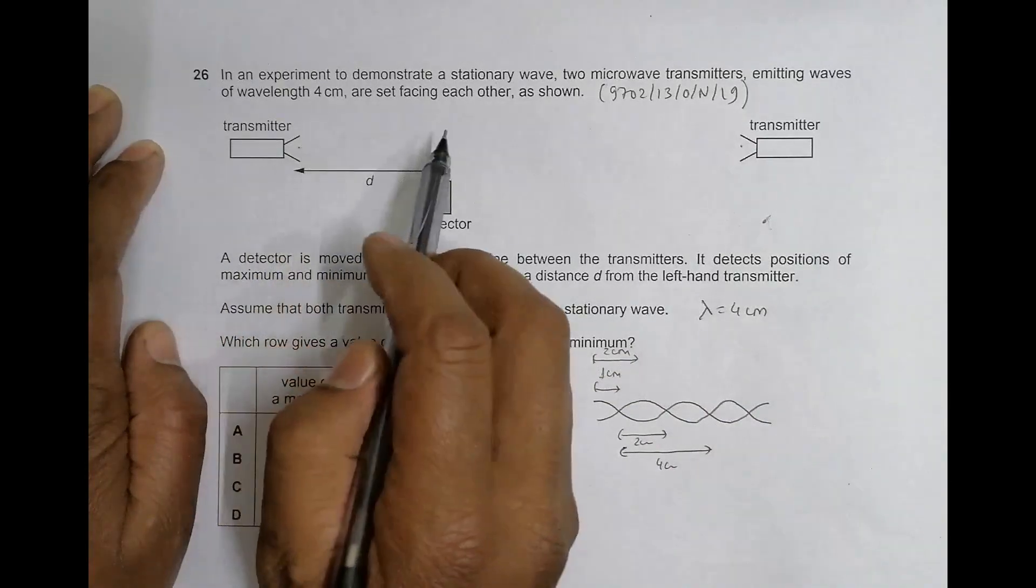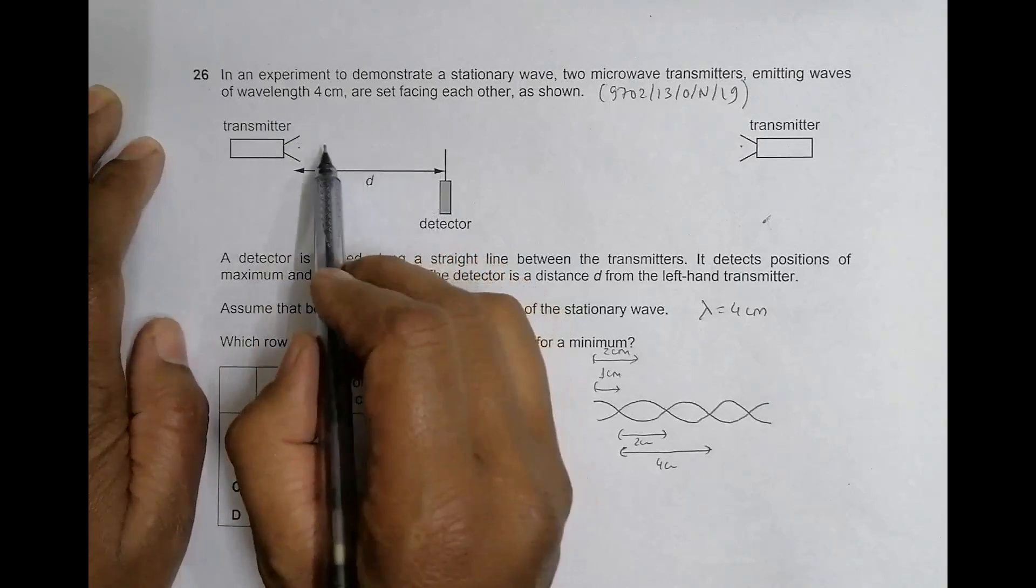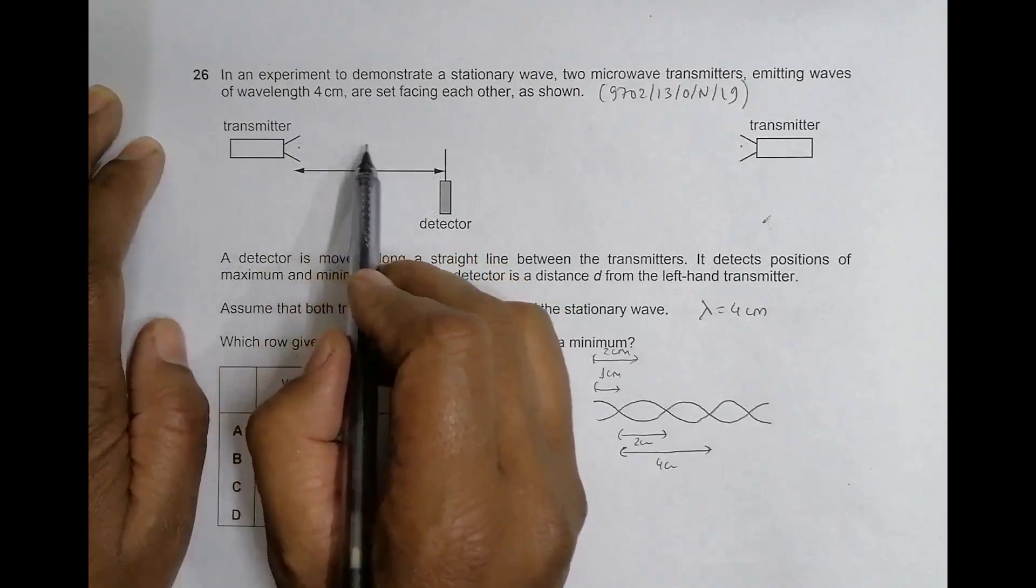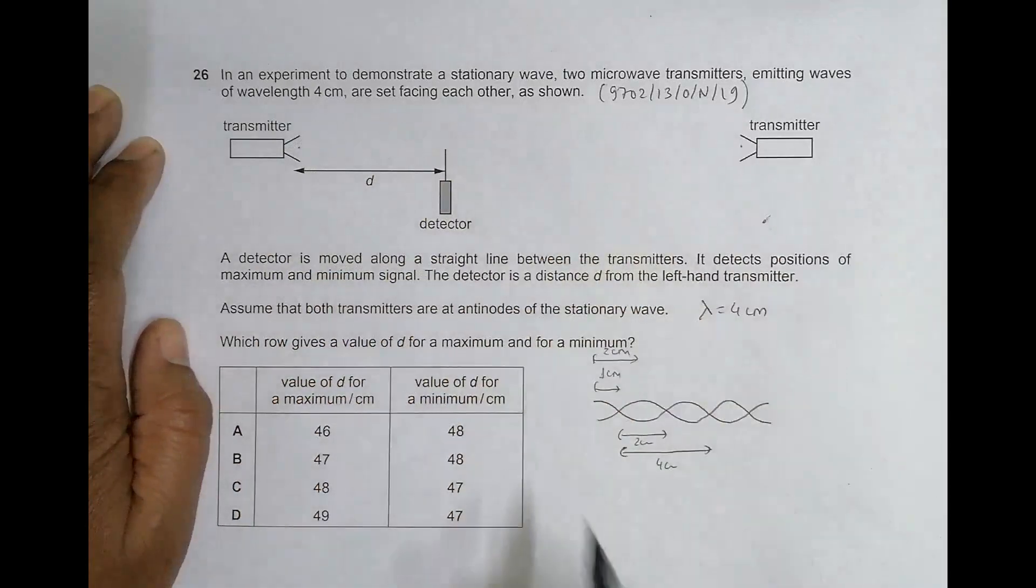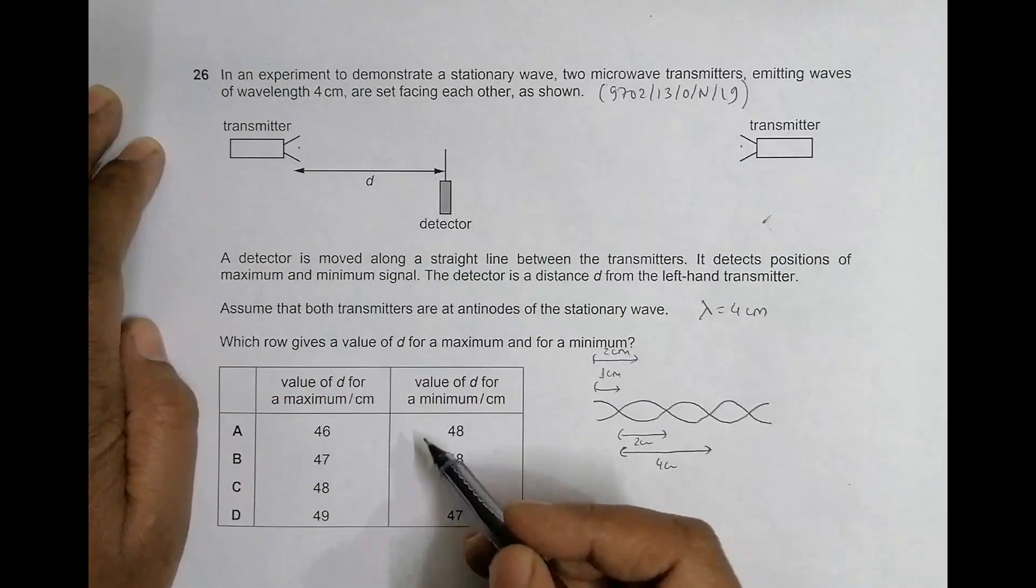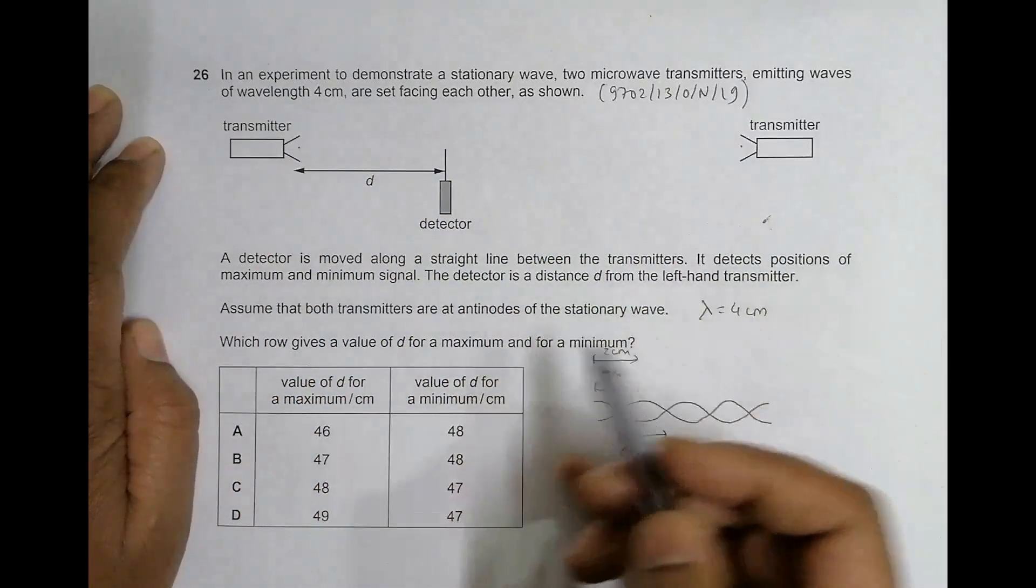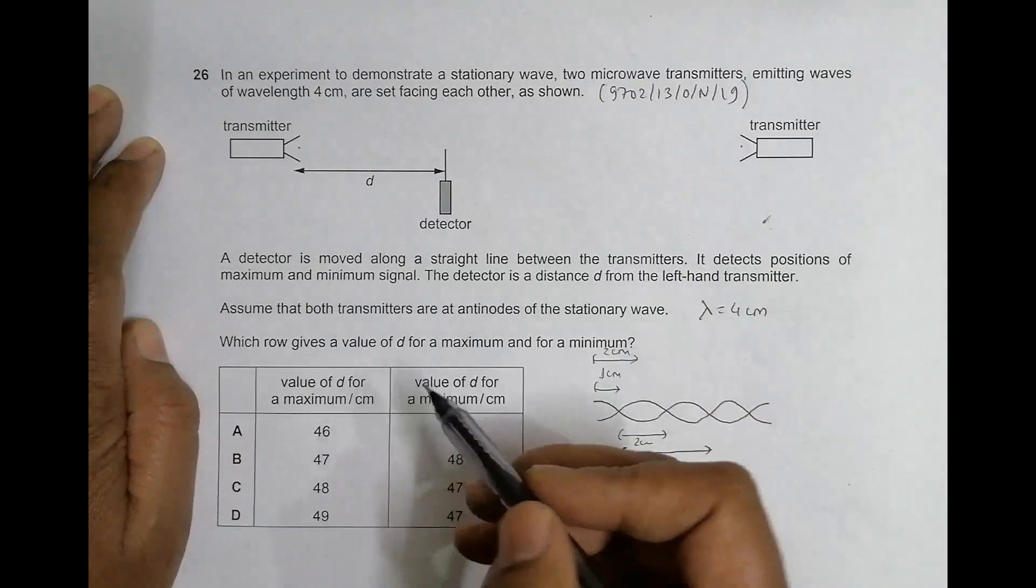So if you go to that choice, antinodes means maximum. Here maximum - a maximum will be formed at 2, 4, 6... even number of centimeters. So it should be even numbers.